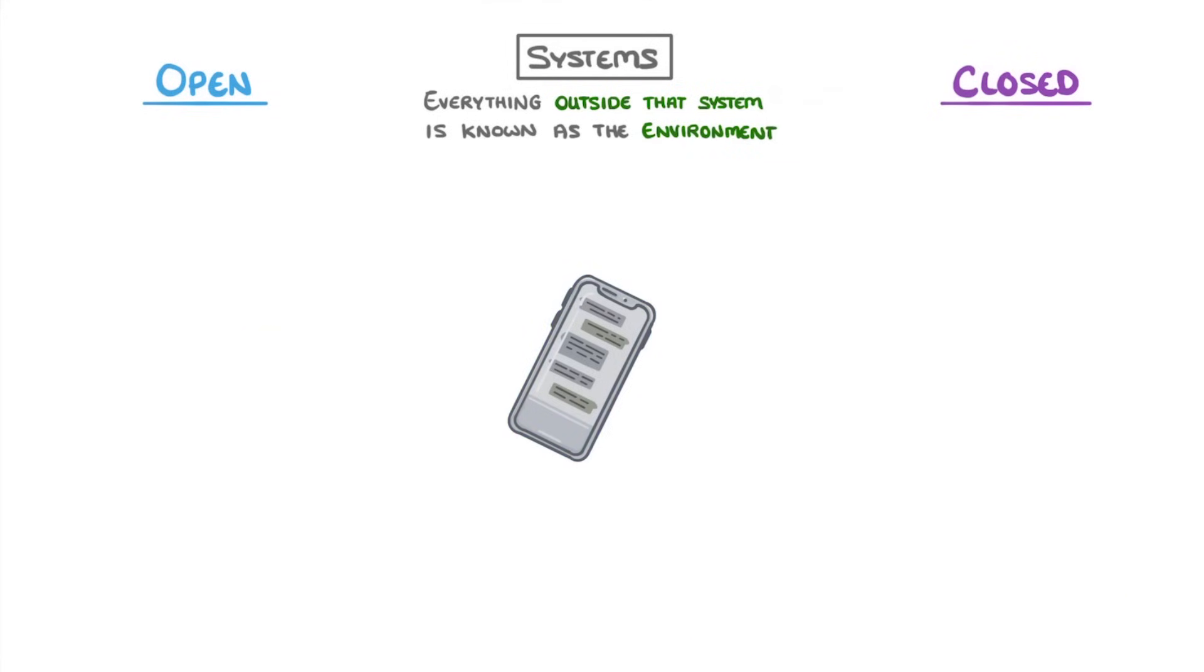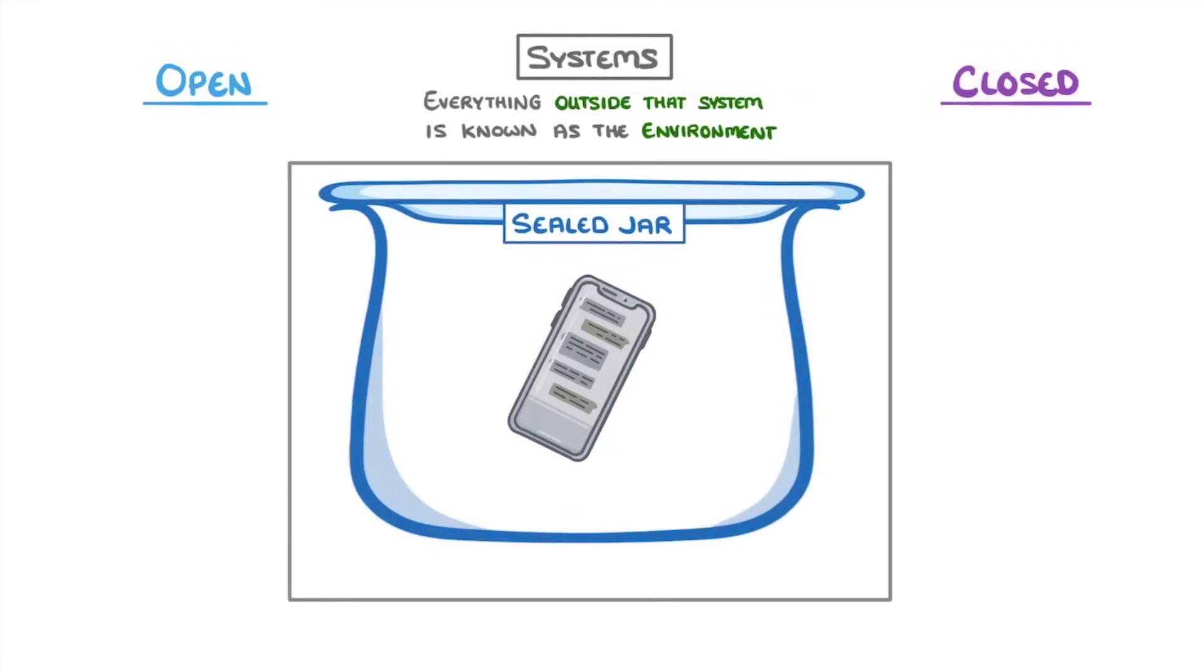On the other hand, if we put your phone in a sealed jar, then our system would be the entire contents of the jar, including the phone and the air within the jar, and we would now call it a closed system, because energy and matter can't enter or escape.